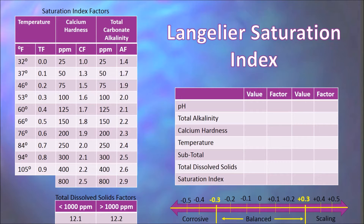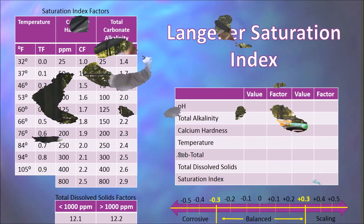Beneath the worksheet on the right, we have a chart indicating the balance of water. If our saturation index results give us a number between negative 0.3 and positive 0.3, that would indicate that the water is in balance. Anything greater than positive 0.3 would indicate that the water is scale forming. Anything less than negative 0.3 would indicate that the water is corrosive.